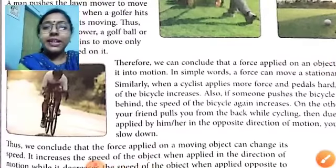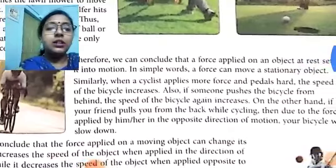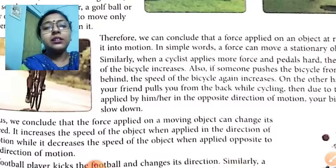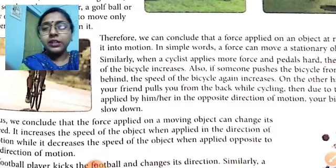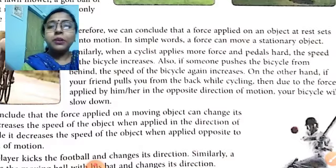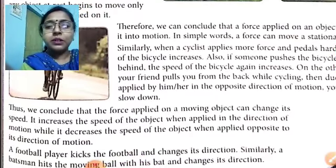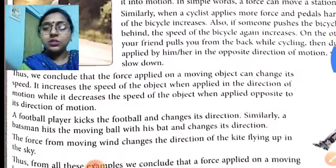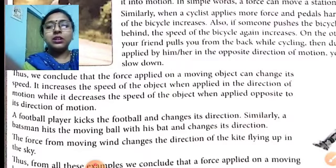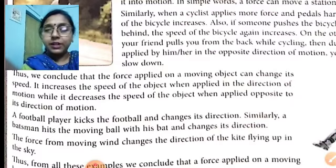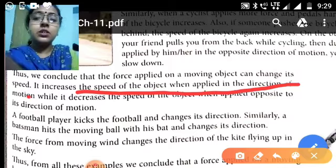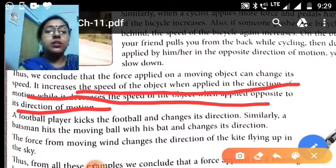When a cyclist applies more force and pedals hard, the speed of the bike increases. If someone pushes the cycle from behind, its speed also increases. On the other hand, if someone pulls you from behind while cycling — applying force in the opposite direction — the speed slows down. So the second effect is: force applied on a moving object can change its speed. It increases speed when applied in the same direction of motion, and decreases speed when applied in the opposite direction.